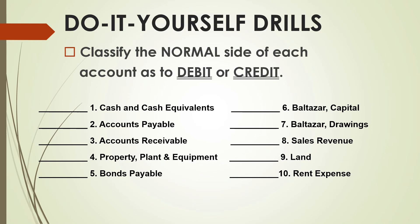Number one: cash and cash equivalents. Cash is an asset, and the normal side of an asset is debit, so the answer for number one is debit. Number two: accounts payable. Accounts payable falls under liability, and the normal side of liability is credit, so the answer for number two is credit. Number three: accounts receivable is classified as an asset and the normal side of asset is debit, so the answer for number three is debit. Number four: property, plant, and equipment falls under assets, so the normal side for PPE is debit.